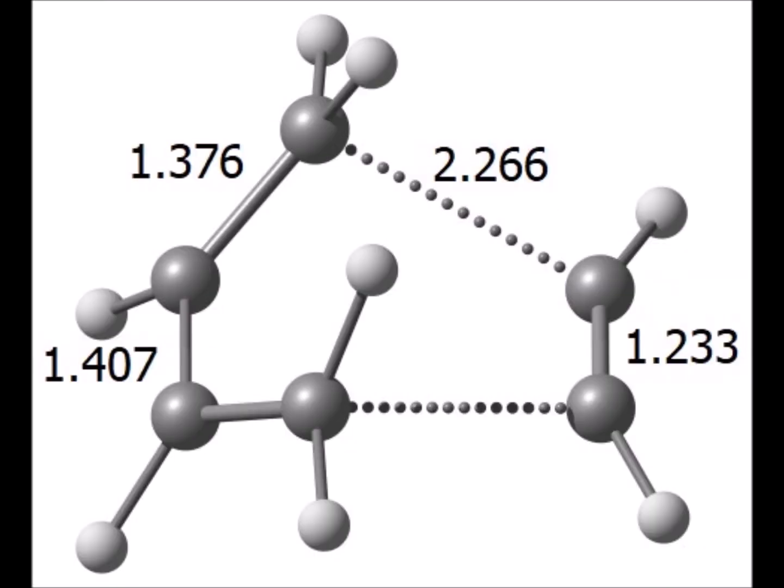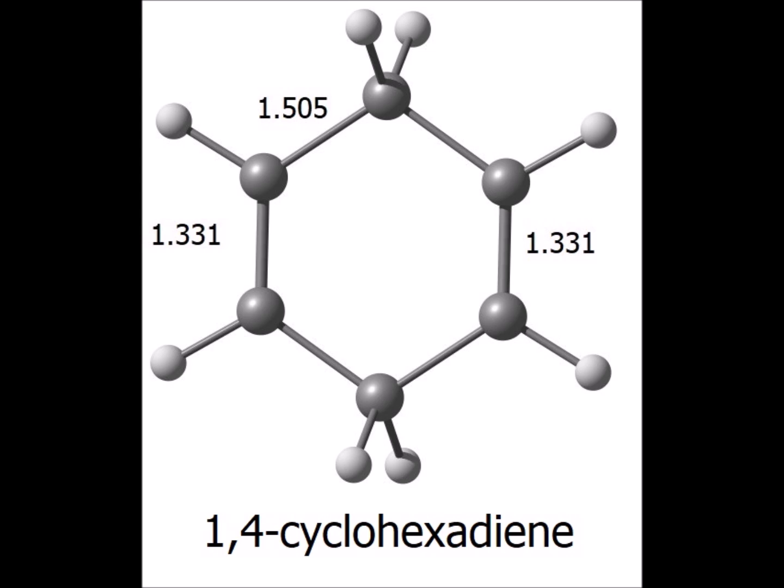Here is a side view of the transition state for the addition of 1,3-butadiene to acetylene. The result of the reaction is the formation of a ring that now has two double bonds — 1,4-cyclohexadiene.